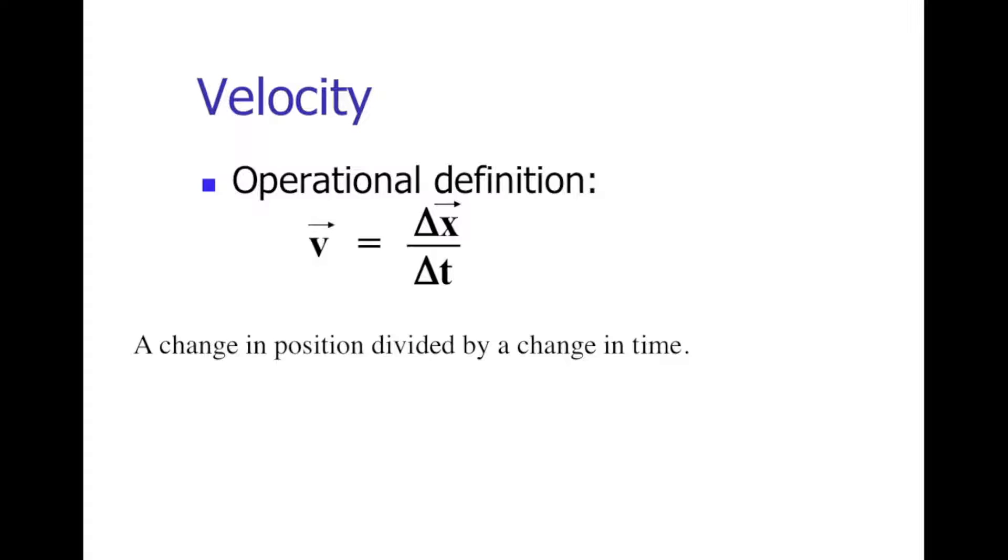Our operational definition for velocity, which is how we can measure or actually use it in practice, is that velocity is a change in position over a change in time. The little arrows above the letters here indicate that we're dealing with vectors in physics, and that means that a velocity has both a magnitude associated with it and some direction that goes with it. I can be moving at 60 miles per hour and my direction would be north. Put those together, and it's not just a speed, it's a velocity.